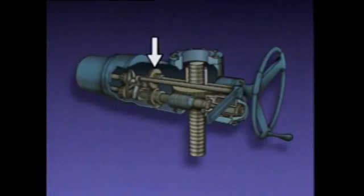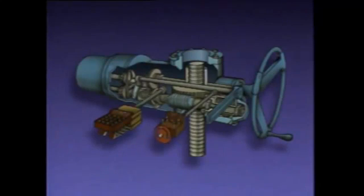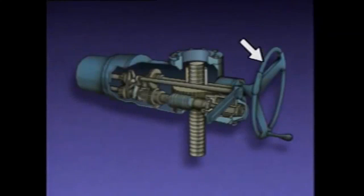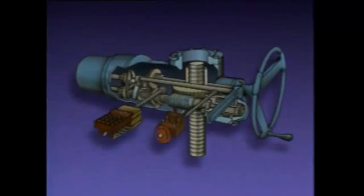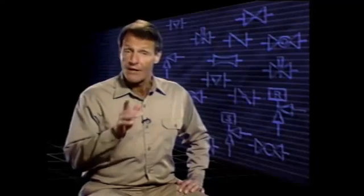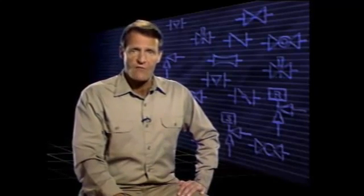The limit switch and torque switch in the motor operator ensure that the valve is positioned without damaging the valve or the motor operator. The torque switch deals with the torque — the amount of turning force produced by the motor operator. It cuts off current to the motor when the torque reaches a preset amount, limiting force on the valve stem to prevent damage while ensuring a tight seal between the valve disc and seat.